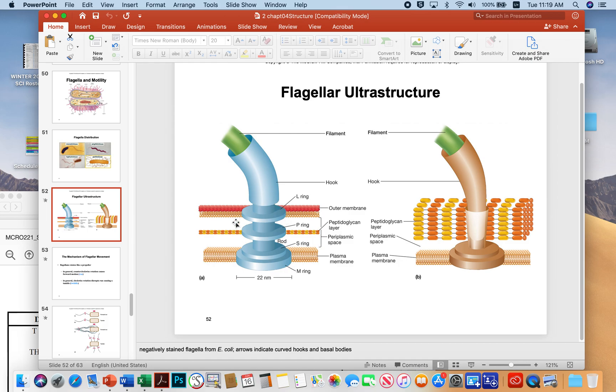This is the basal body motor structure. You see the SM ring, the P ring, and the L ring that's embedded in the LPS layer. The P ring in the peptidoglycan layer and the membrane ring, the S and M membrane rings. Here's the hook and then the filament that would go out into the world. This thing spins using proton motive force. Protons that are pumped into the periplasm and then come back in will cause this to spin different directions depending on whether the microbe wants to go toward something or away from something.